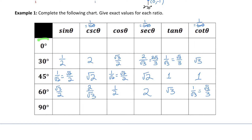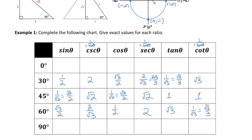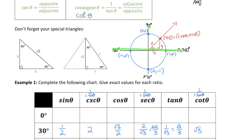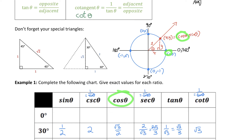In our table we have two more angles to find the ratios for: 0 and 90 degrees. I left those for last because when we want ratios for an angle that lands exactly on the x or y-axis, we want to use the unit circle. Sine of an angle equals the y-coordinate of where the terminal arm intersects the unit circle, cosine equals the x-coordinate, and tan equals the y-coordinate divided by the x-coordinate. For 0 degrees, the terminal arm intersects the unit circle at the point (1, 0). The y-coordinate is 0, so sine of 0 is 0. The x-coordinate is 1, so cosine of 0 is 1. And tan is 0 divided by 1, which is 0.